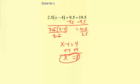Notice that even though there were decimals in the equation, it's the same process. You want to get the x by itself, so you subtract, you divide.